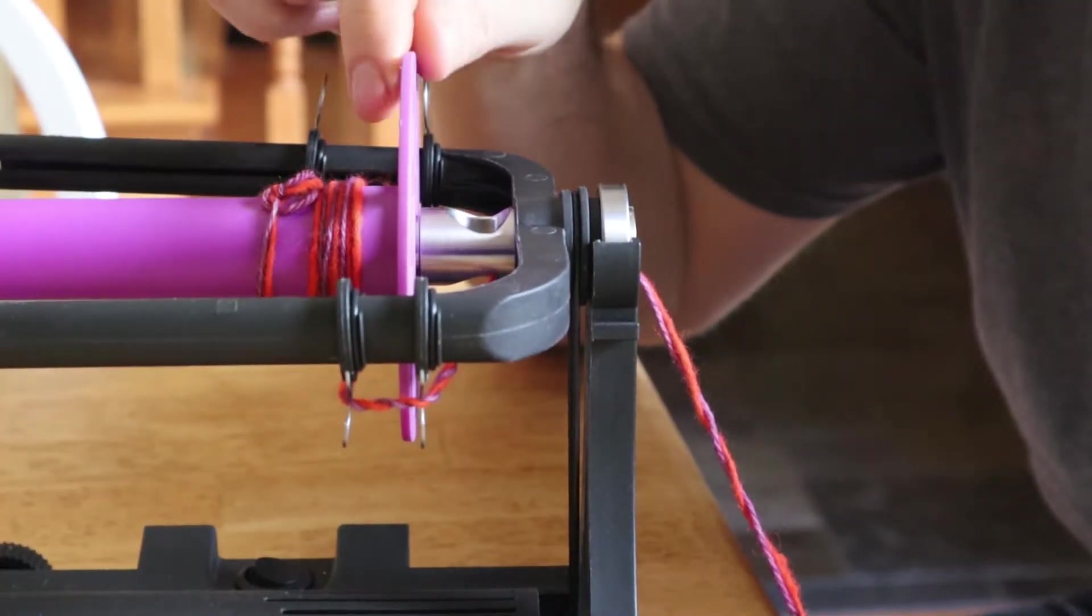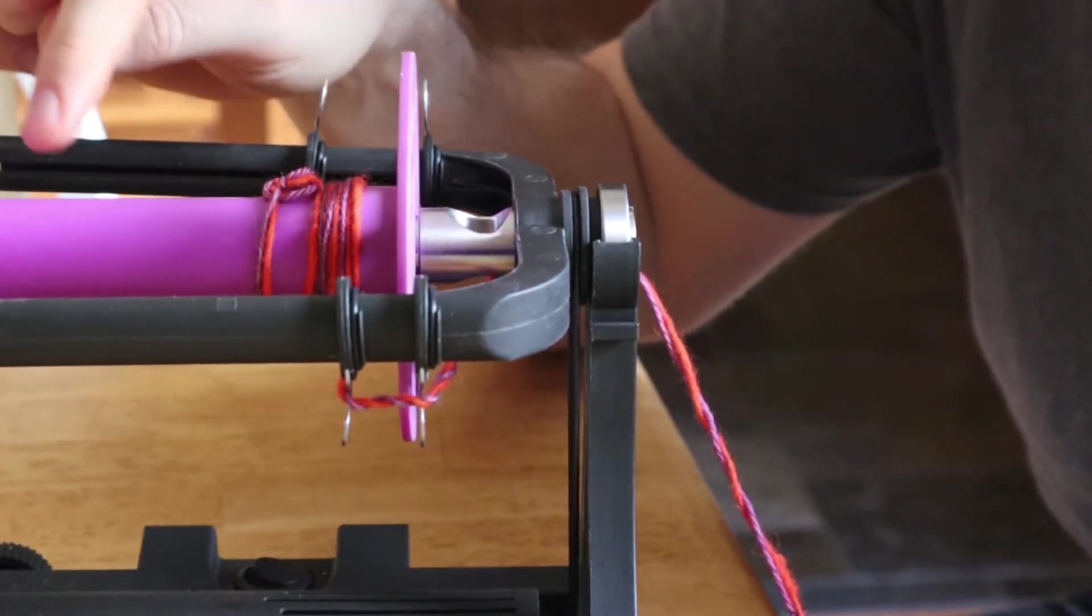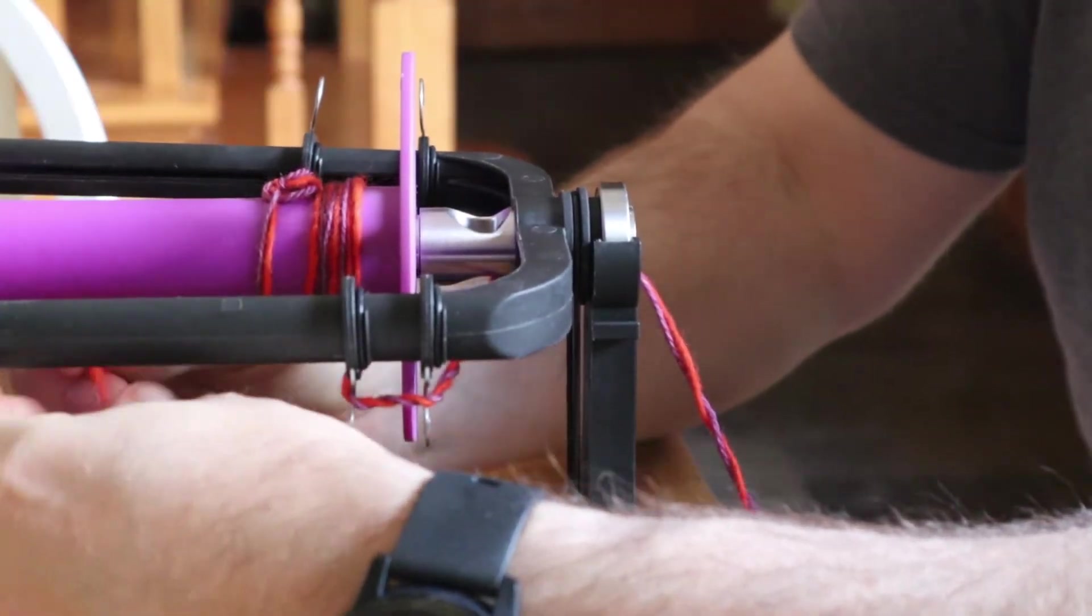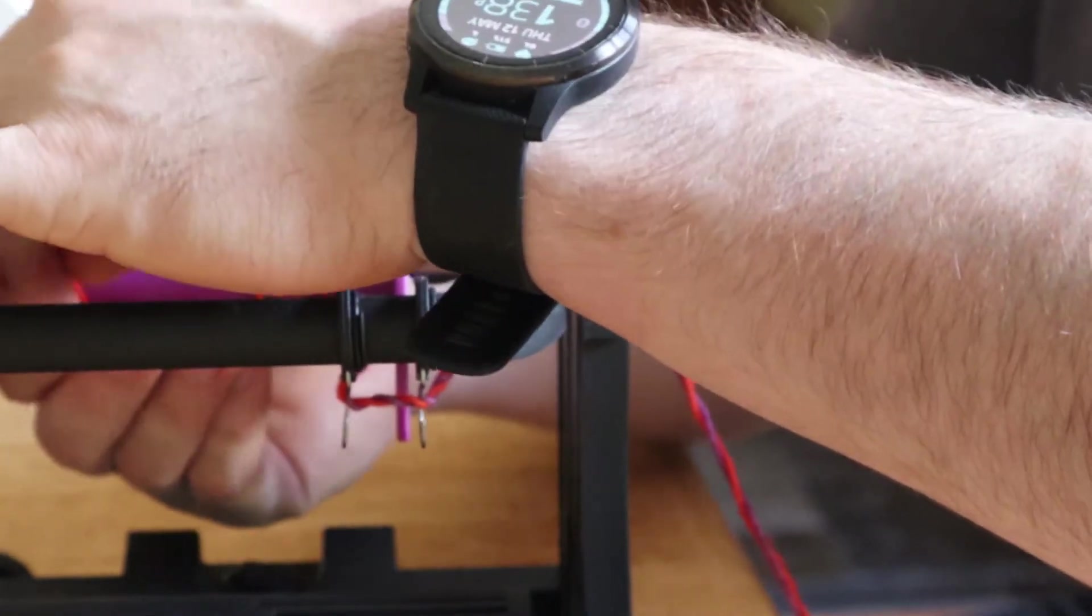So at the beginning I promised I would explain why you need to increase the tension as the bobbin fills up and now that we understand how a flyer works I can show you that.